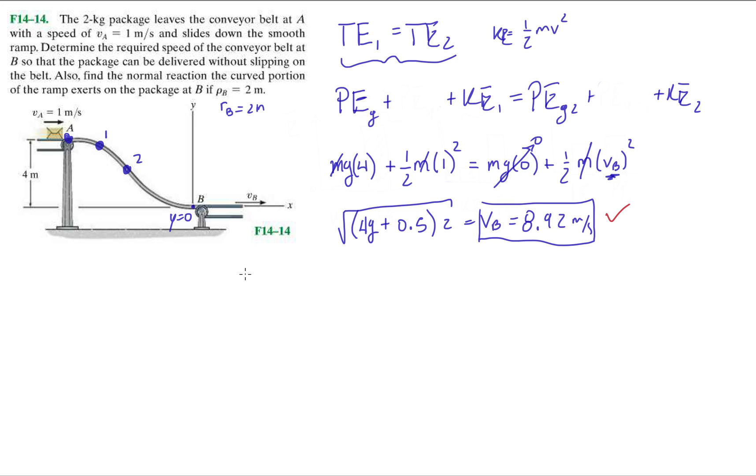The next thing is find the normal reaction the curved portion of the ramp exerts on the package at B. So let's draw a free-body diagram of the package at B. Look at that box. Here's the Amazon package. So what are the forces here? The normal force that the surface is exerting on the box, and then the weight going downwards.